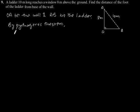We will get AB² = OA² + OB². Putting the values: 10² = 8² + OB².